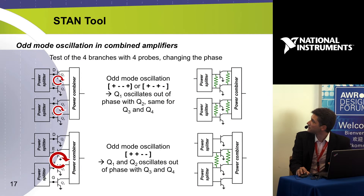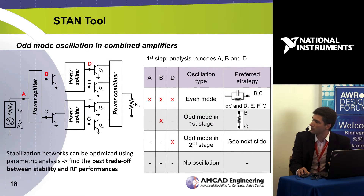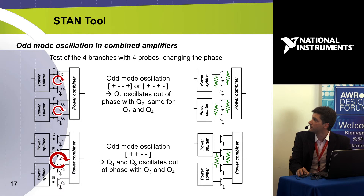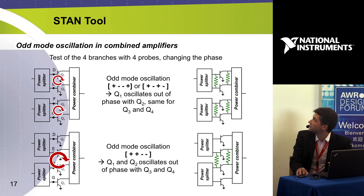If oscillation is detected only at node D — indicating an odd-mode oscillation between four transistors — we connect four probes at the gates of the four transistors and excite different oscillation modes. This lets us determine whether the odd-mode oscillation is of type plus-minus-minus-plus (transistors one and two out of phase, same for three and four) or plus-minus-plus-minus, or plus-plus-minus-minus (one block of two transistors oscillating out of phase with the other block). Depending on the result, we choose between different interbranch stabilization networks.